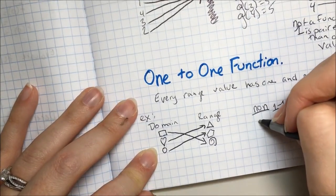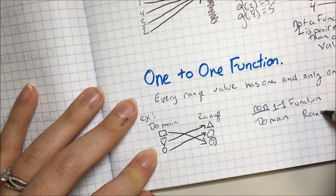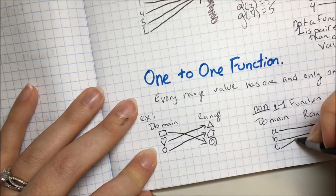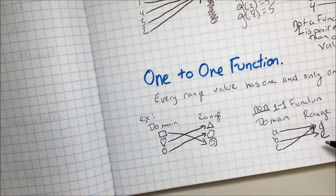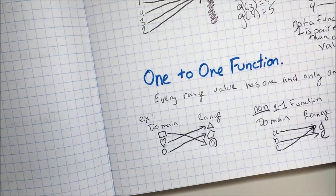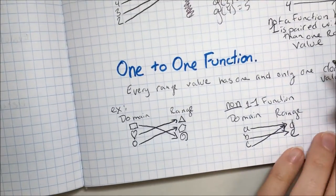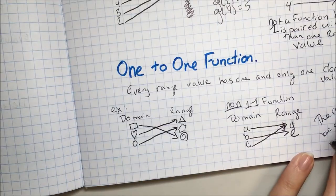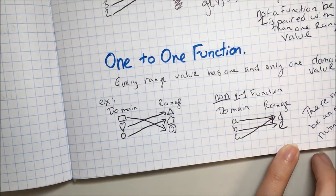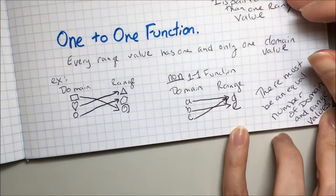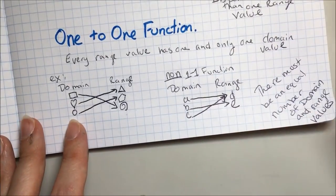A non-one-to-one function might look like this: domain A, B, C, D, E — where A goes to D, B goes to E, and C also goes to D. In this case, range value D has two domain values, so this is not one-to-one. In a one-to-one function, there must be an equal number of domain and range values.